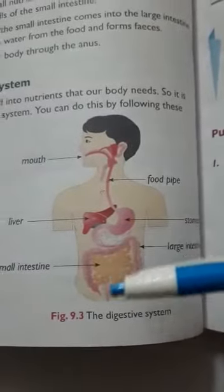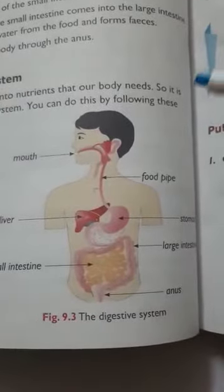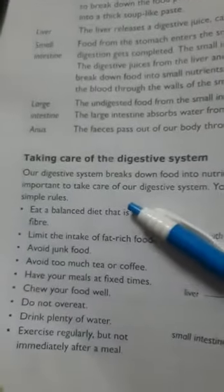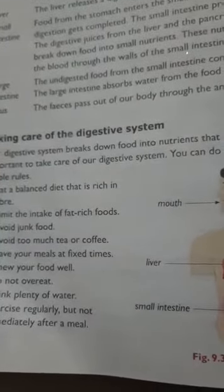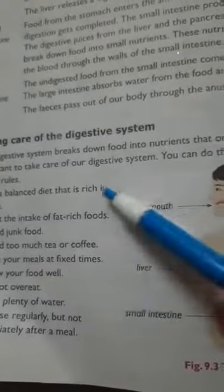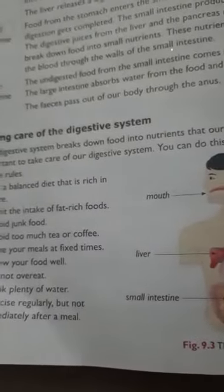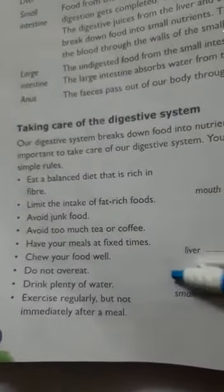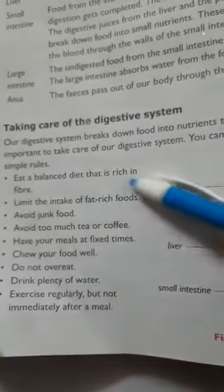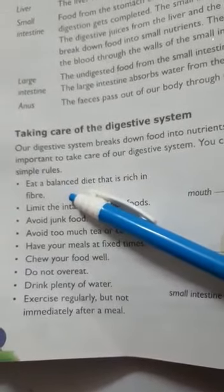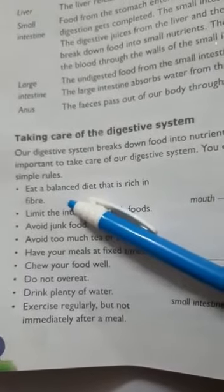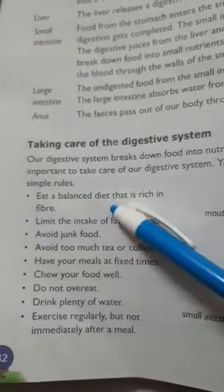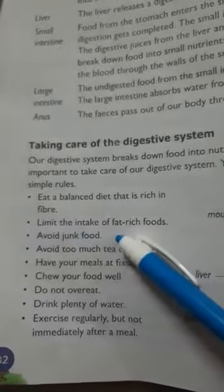The digestive system is very important for us — it breaks down food, digests it, absorbs nutrients, and gives energy to the body. So we must take care of our digestive system by following simple rules. First: eat a balanced diet that is rich in fiber, including carbohydrates, fats, proteins, vitamins, minerals, roughage, and water in proper quantities.